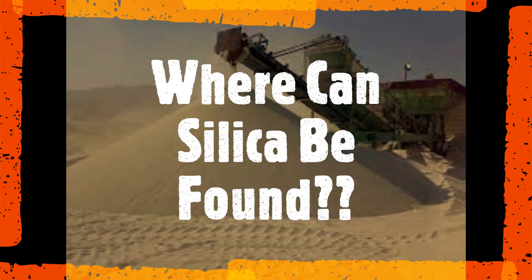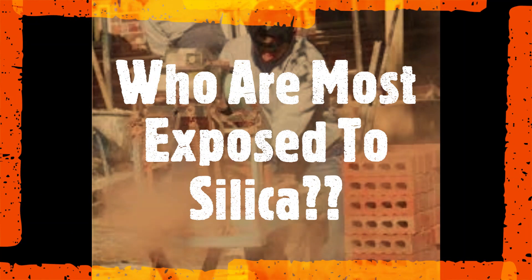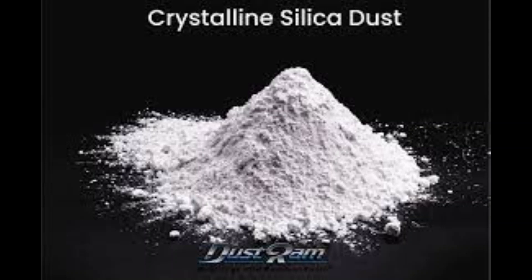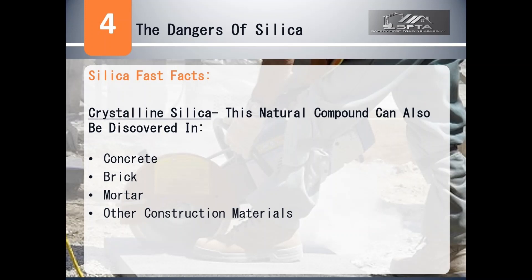Your next question should be: where can silica be found, and who are the people most exposed to silica? Silica is an abundantly natural material that can be found in various locations on earth. Crystalline silica can be found within rock, stone, soil, clay, gravel, and sand. This natural compound can also be discovered in concrete, brick, mortar, and other construction materials.